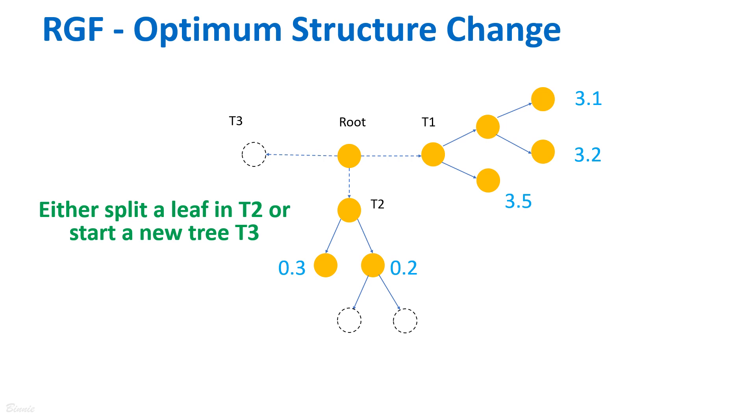When the weights of the existing leaf nodes are fixed, RGF performs the optimum structure change.